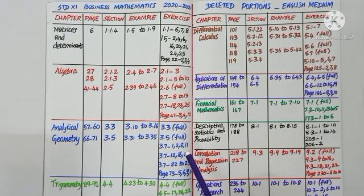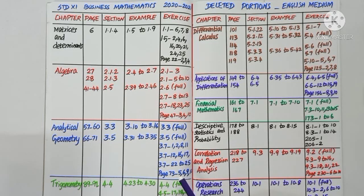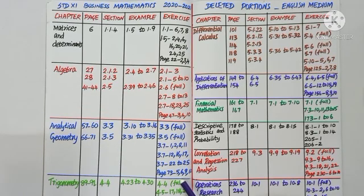In objective type questions, exercise 3.7, problem numbers 1, 2, 8, 11, 12, 16, 17, and 22 to 25 are deleted. In miscellaneous problems at the end of Chapter 3, page number 73, question numbers 5, 6, 9, and 10 are deleted.